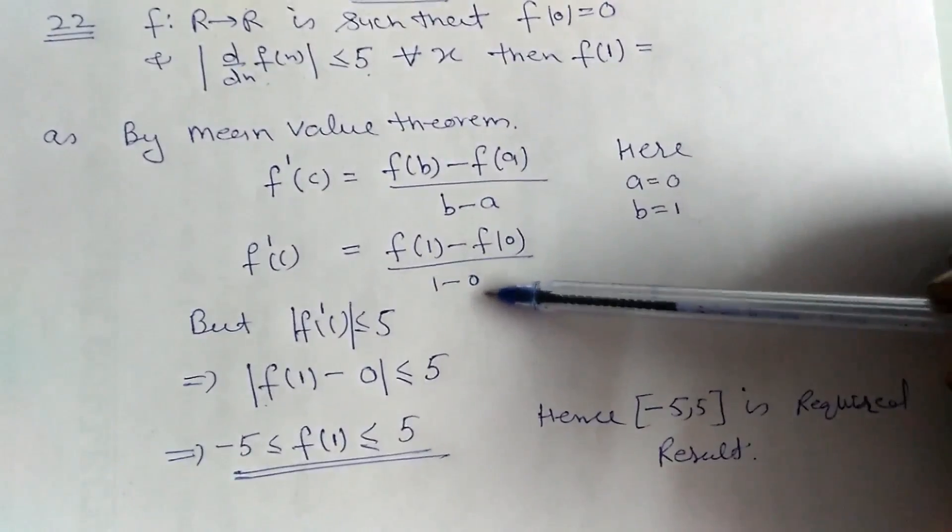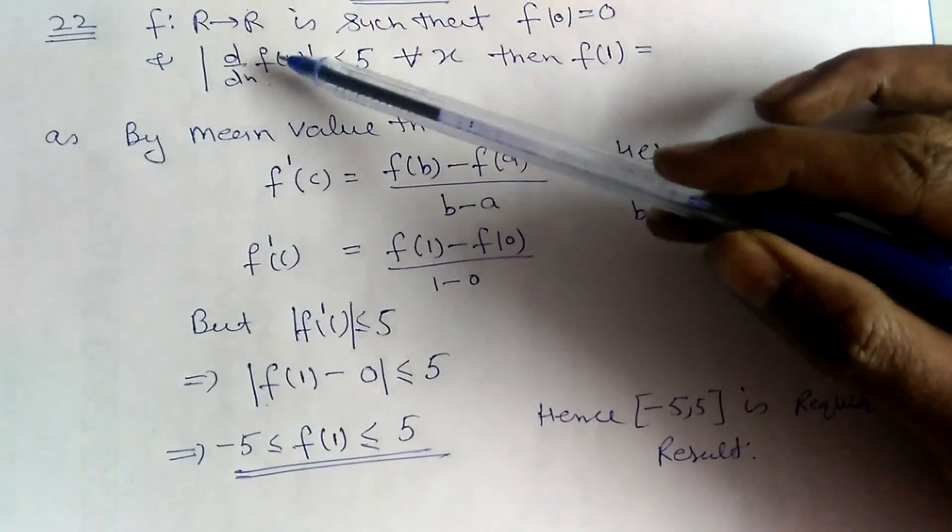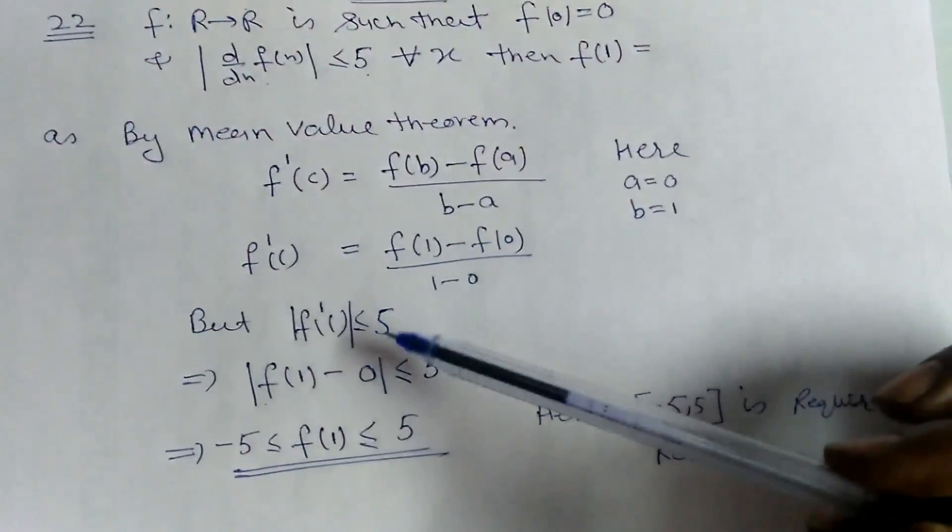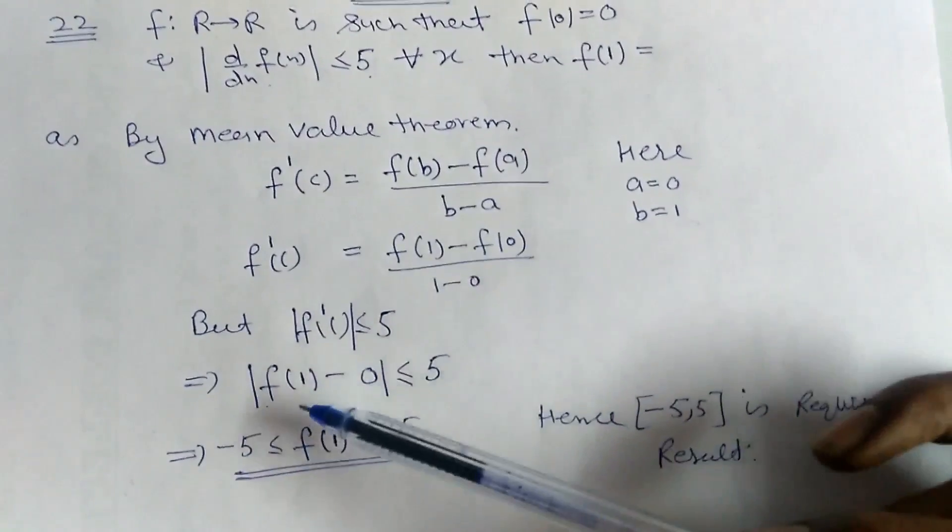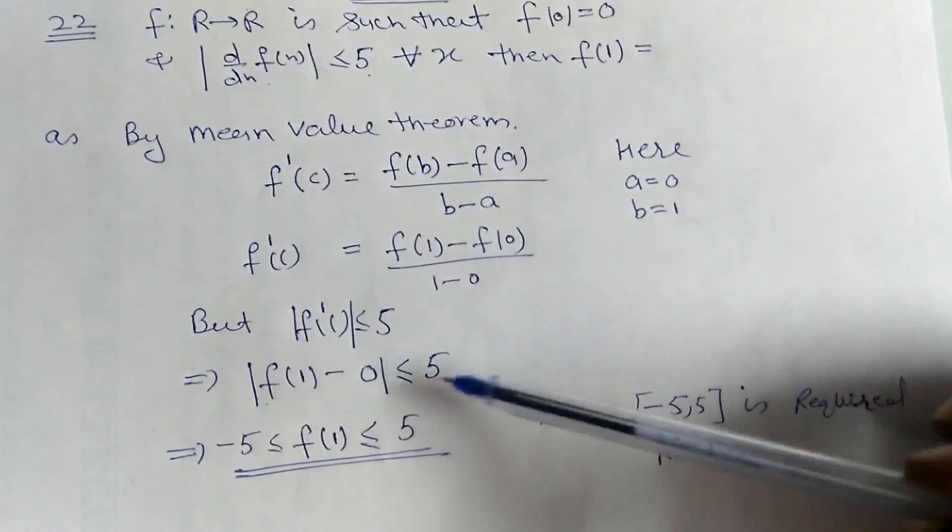But it is given that the derivative is less than or equal to 5. Placing the value here, I am getting |f(1) - 0| ≤ 5.